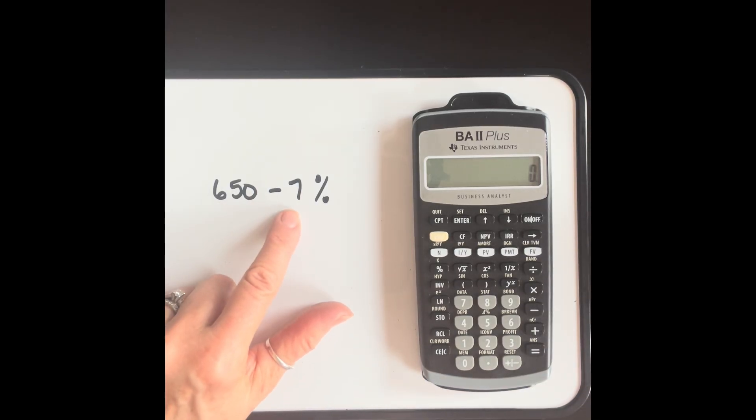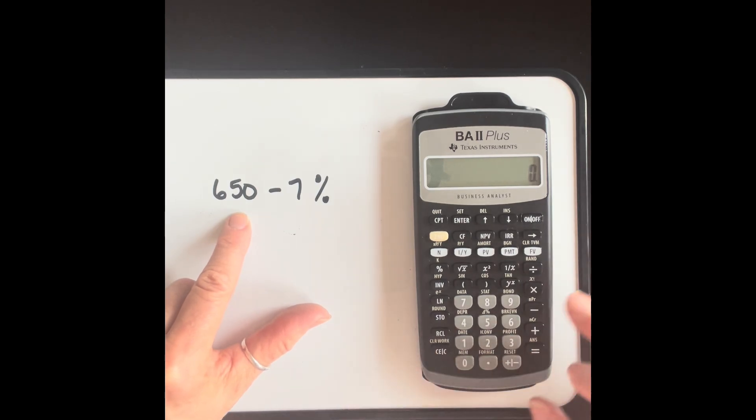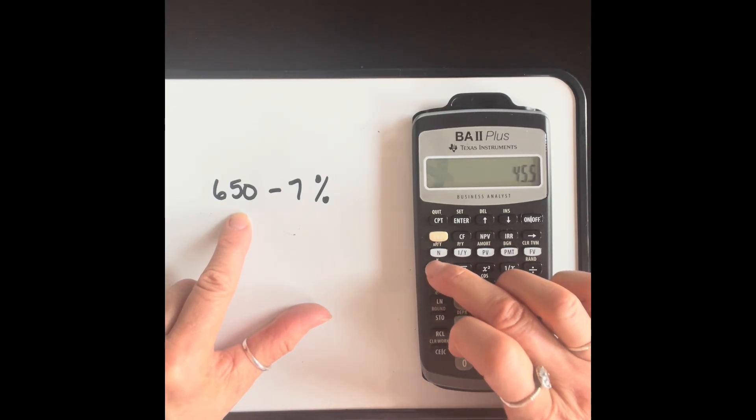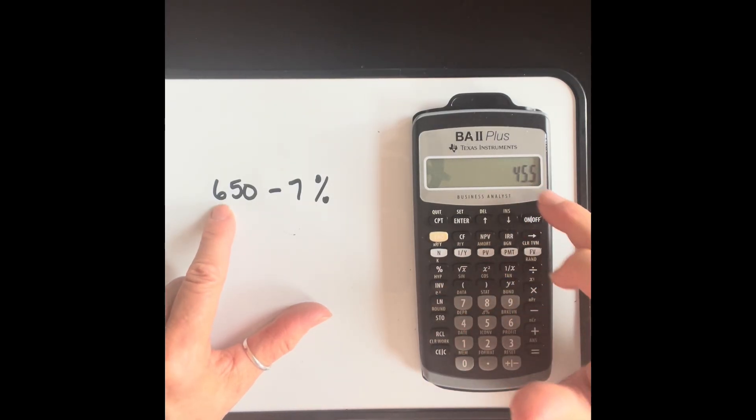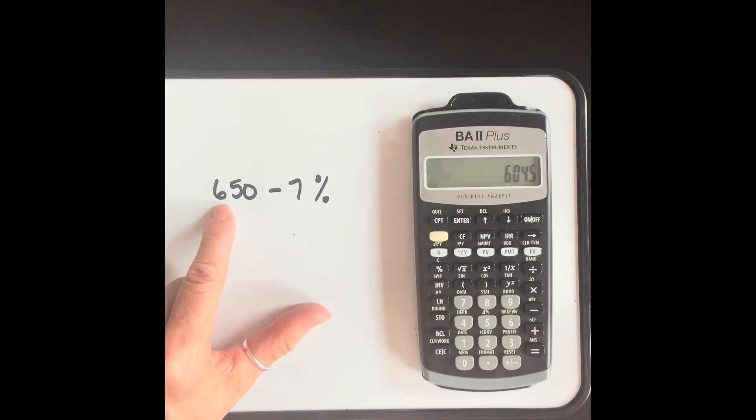Similarly, we could subtract a percent from a number. Maybe we're discounting a certain product. So in that case, we're going to go 650 minus 7%. Again, that's 7% of 650, but to actually subtract it, we press equals.